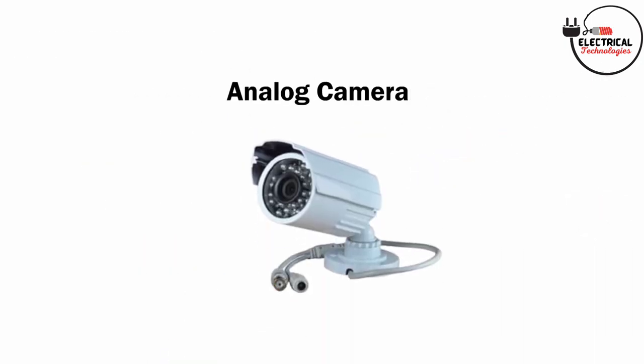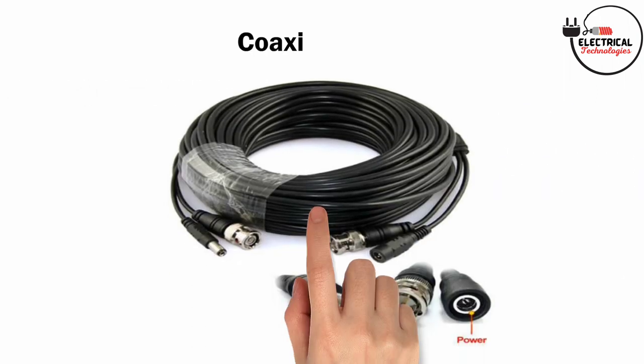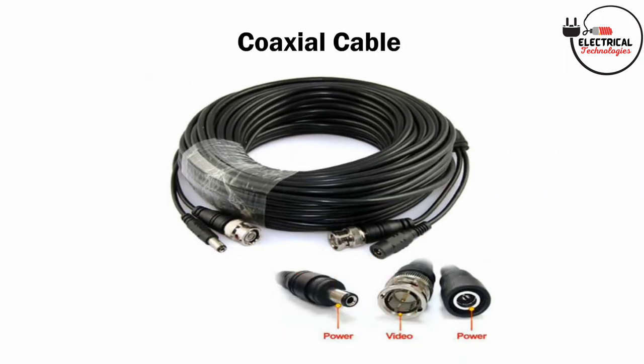Analog cameras: as discussed before, the DVR system uses analog cameras. The camera is responsible for streaming an analog signal to the recorder, which then processes the video data. Unlike NVRs, most DVR cameras are less expensive. Coaxial cables: coaxial cables connect the analog camera to the DVR system. The use of coaxial cable may not seem significant due to their limitations; however, ultimately data is transferred over this cable type.